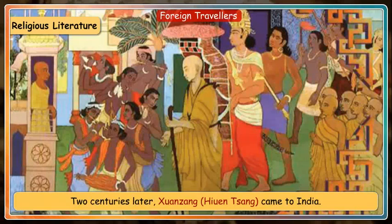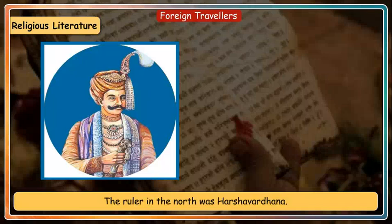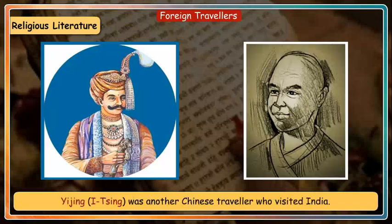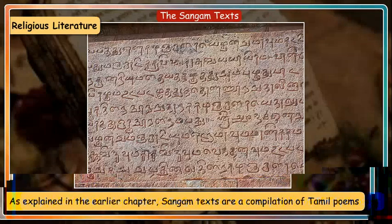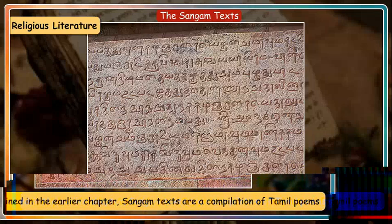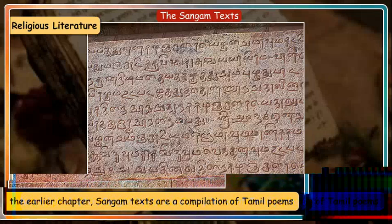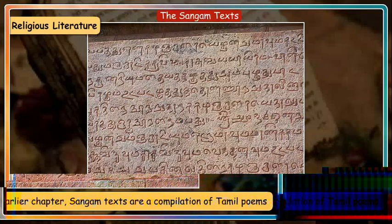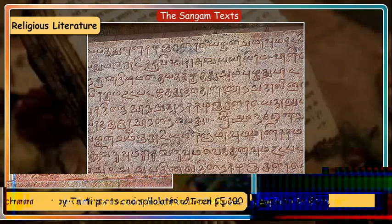Xuanzang came to India and wrote about the conditions of those times; the ruler in the north was Harshvardhana. Yijing was another Chinese traveller who visited India.